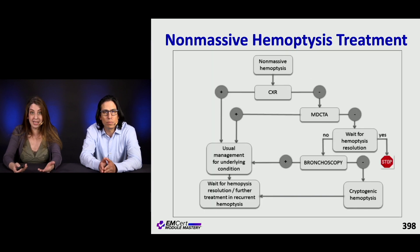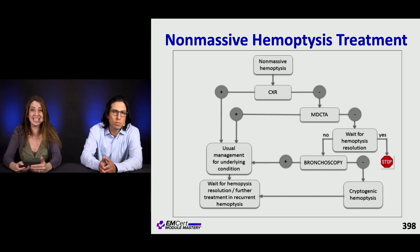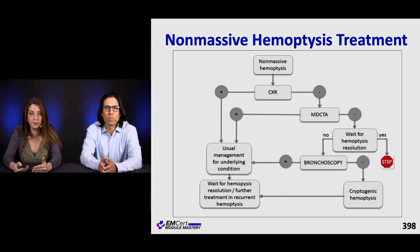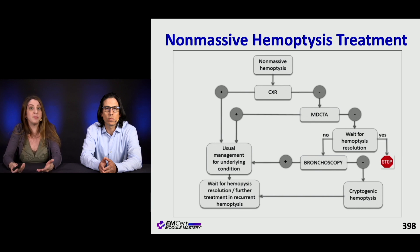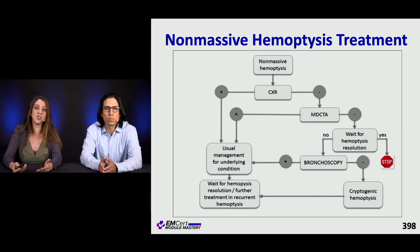This is an algorithm for non-massive hemoptysis treatment, which is considered less than 50 cc's per cough. The way I think about it is: if you walk in and the patient is coughing up blood and you're alarmed, it's probably not non-massive. If you're freaked out, it's probably massive. With non-massive, these patients get imaging and you use this algorithm to determine if they need bronchoscopy.